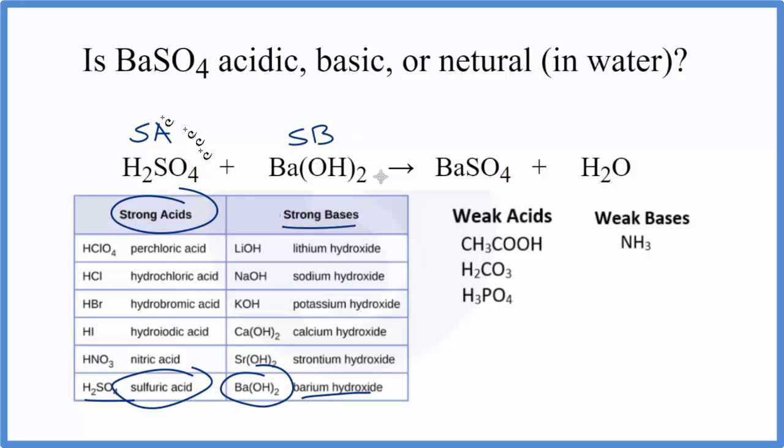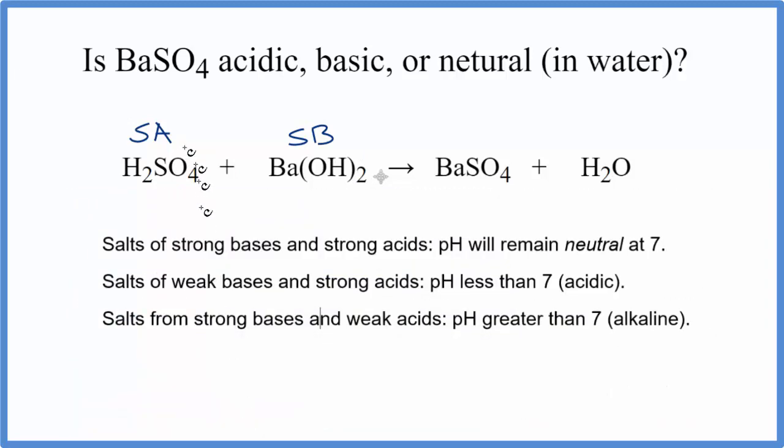Now we know the strength of the acid and the base, we can use the rules. We're looking for a strong acid and a strong base. According to our rules, when a strong base and a strong acid react in the neutralization reaction, the pH will remain neutral at 7.